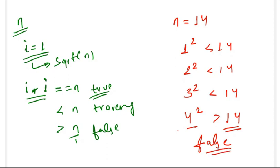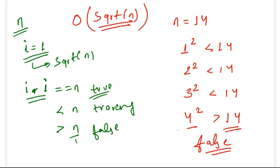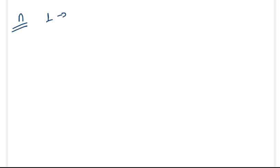This loop works only for square root of n iterations, because by that point we will have gotten either true or false, making the time complexity O(√n). However, we have another approach to solve this in better time complexity. Since the answer lies between 1 and n, we can use binary search to find the square root of n.